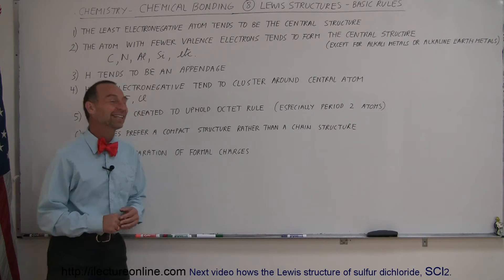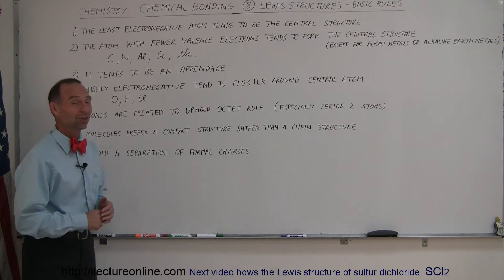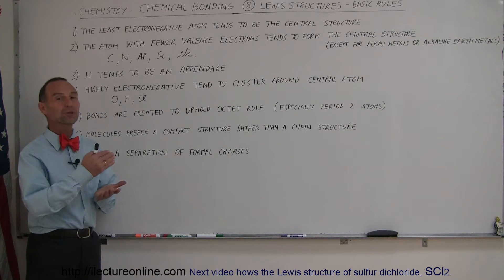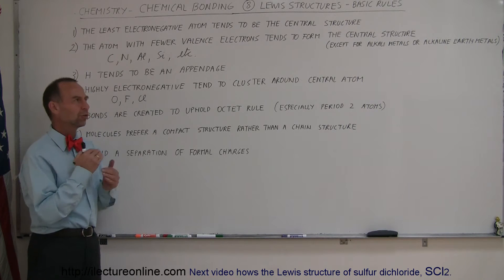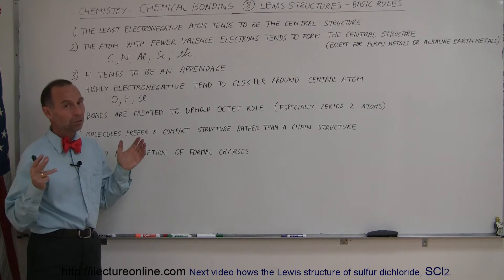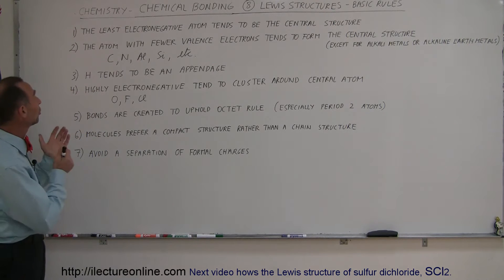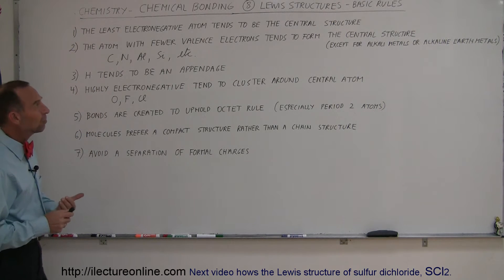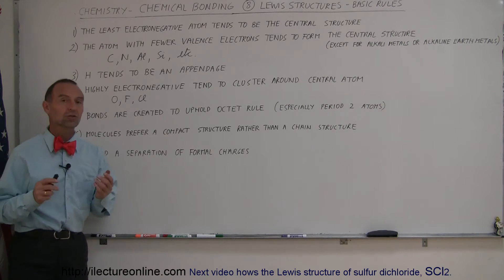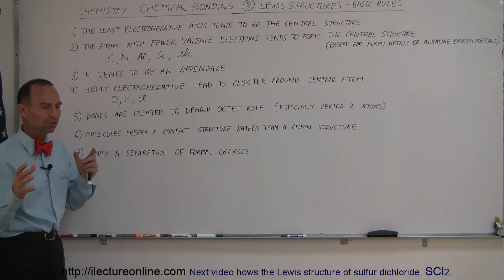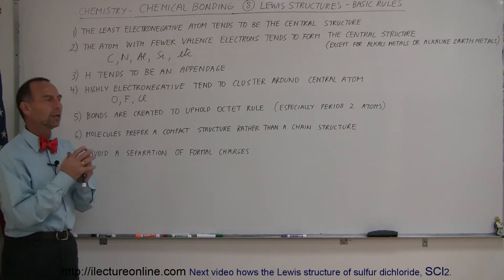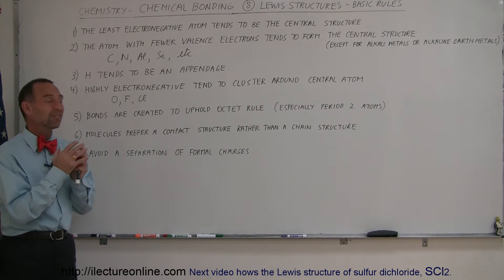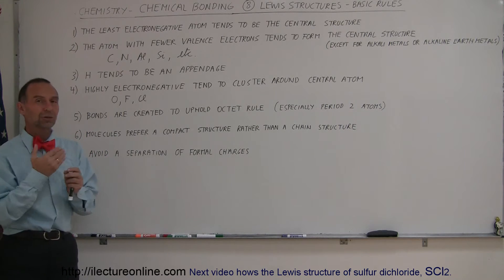Welcome to ElectronLine. Before we start showing a whole bunch of examples of Lewis structures, let's review the basic rules of what we should think about when we put these Lewis structures together. Rule number one: the least electronegative atom tends to be the central structure. If we have a combination of different atoms forming a molecule, the one that ends up at the center tends to be the one with the lowest electronegativity.